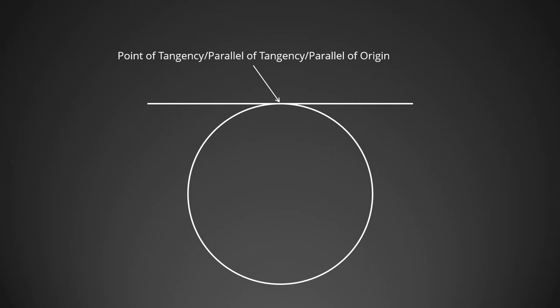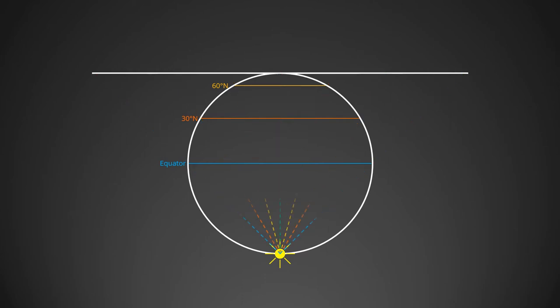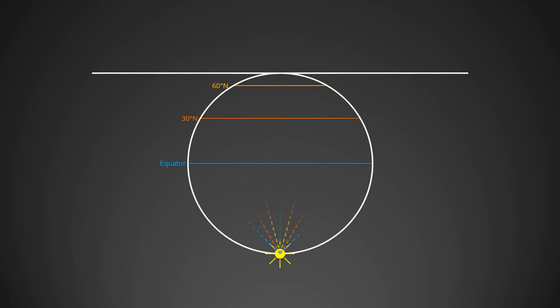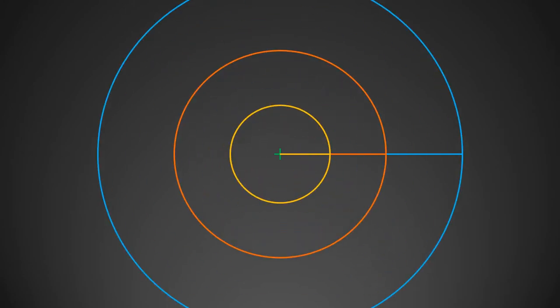However, it is not wrong to call this point the parallel of tangency or parallel of origin. The dashed lines simulate the light paths of azimuthal projection. As you can see, the green light path hits the reduced earth and the paper simultaneously, thus making the scale correct at the pole. Other light paths require more travel time. Since the chart emanates from a single point and expands outward, the scale expands at a constant rate in all directions. The meridians are straight lines originating from the pole, and parallels are concentric circles centered at the pole. All parallels and meridians intersect at right angles.